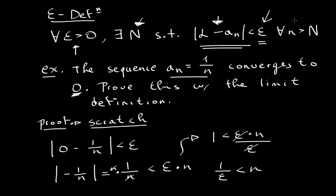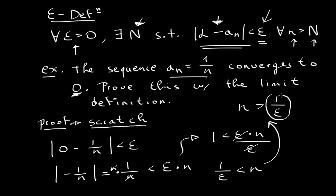In our definition we know that n has to be greater than N. So this basically says that n is greater than 1 over epsilon. So if n is greater than this value, then this value has to be your big N — it only makes sense. This is your scratch work; you can even write 'scratch' so that whoever is marking your proof can ignore it.